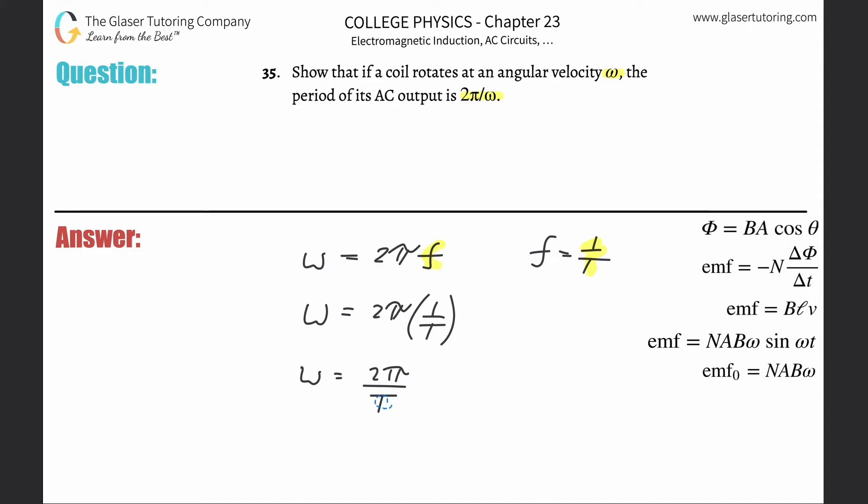Now what I want to do is basically we've got to show that the period - we just got to solve this for the period. And look, just do a little boop, and there we go. The period now is equal to 2π over the angular velocity.